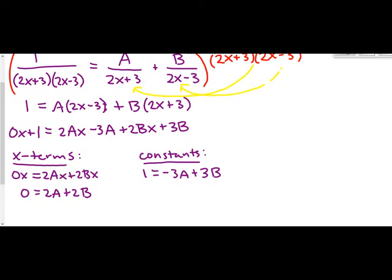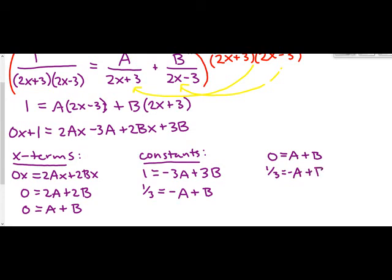We can solve the system using substitution, elimination, or matrices — graphing is not recommended. Using elimination: divide the first equation by 2 to get 0 = A + B, and divide the second equation by 3 to get 1/3 = −A + B. Adding those equations eliminates A, giving 1/3 = 2B, so B = 1/6. Looking back at 0 = A + B, A must be the opposite of B, so A = −1/6.